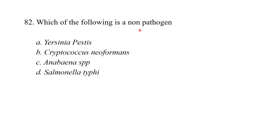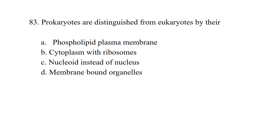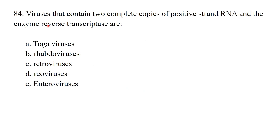Which of the following is non-pathogenic? Anabaena species are non-pathogens — these are cyanobacteria responsible for nitrogen fixation. Prokaryotes are distinguished from eukaryotes by having a nucleoid instead of a nucleus. Prokaryotes have no membrane-bound nucleus. Viruses containing two complete copies of positive-sense RNA and the enzyme reverse transcriptase are retroviruses.